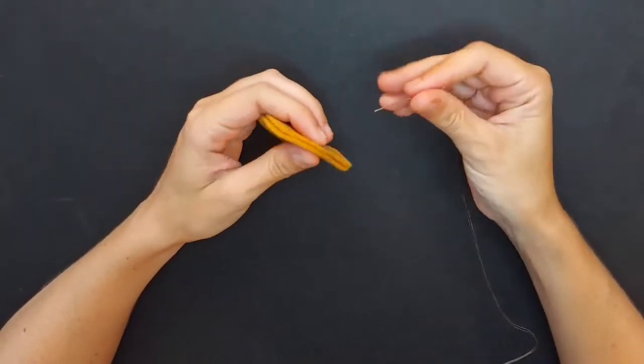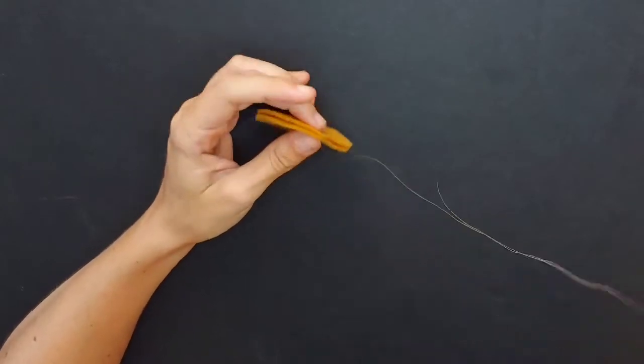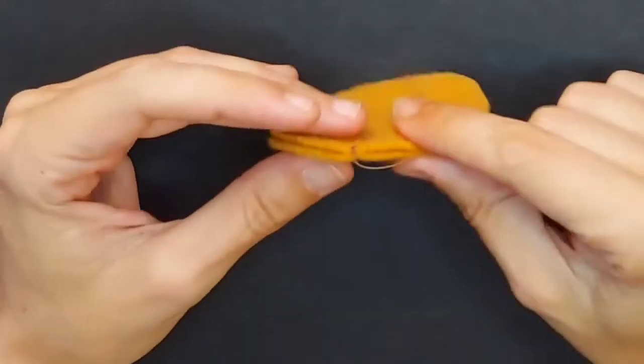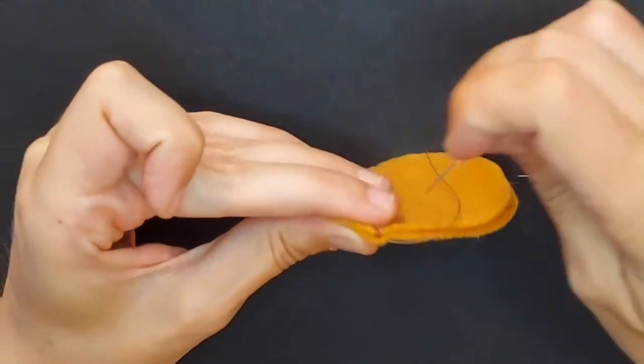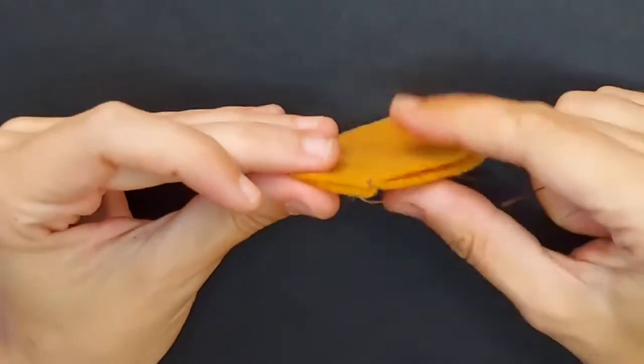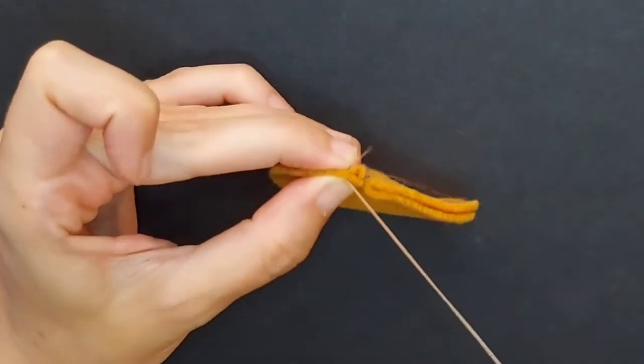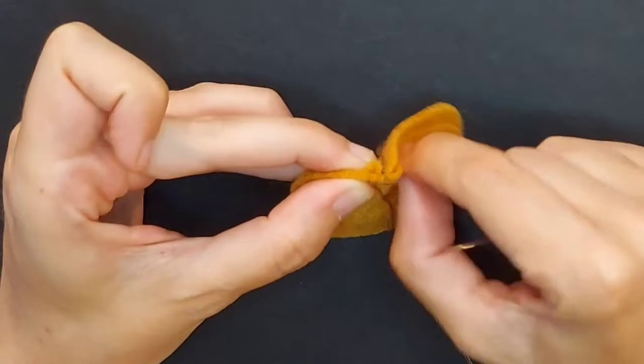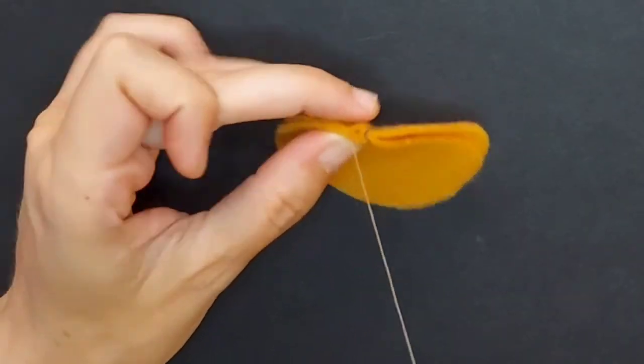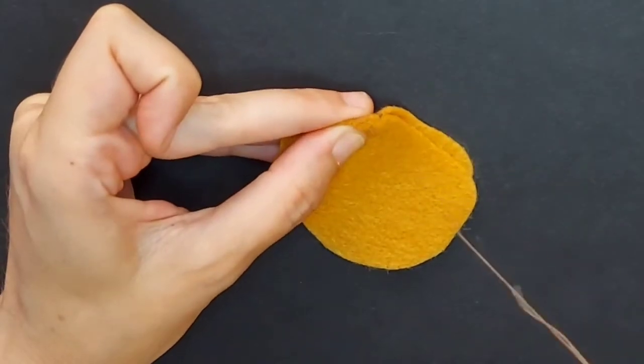I just put my knot on the outside, and then I'm gonna be whip stitching along, except I'm going to be bunching it on alternating sides each stitch. So there I did the bottom, now I'm doing the top, and it just gave it a nice little ripple effect on the outside.